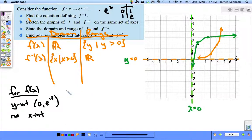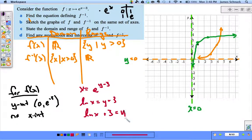Before we find intercepts for f-inverse, let's find f-inverse. Okay, so I'm going to write x equals e to the y minus 3. Natural log of x equals y minus 3. Change it to a log form. Natural log of x plus 3 is equal to y. There's our inverse.